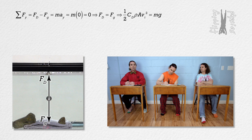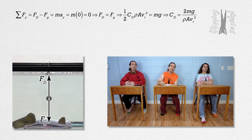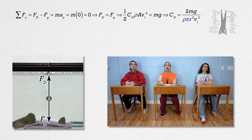Substitute in equations for those two forces and solve for the drag coefficient. We get the drag coefficient equals the quantity two times mass times acceleration due to gravity, all divided by the quantity density times cross-sectional area times the terminal speed squared. Let's substitute in pi times radius squared for cross-sectional area, because the cross section of the steel sphere is a circle and pi times radius squared is the area of a circle. That is the equation for drag coefficient in this situation.